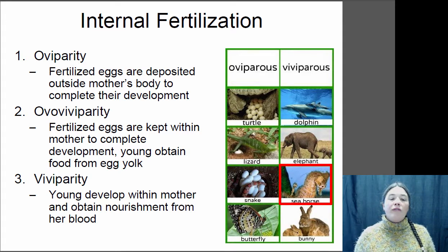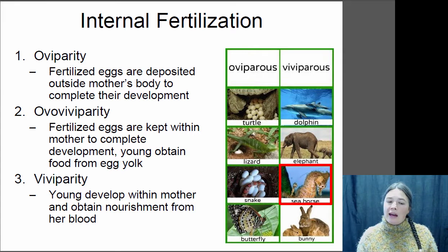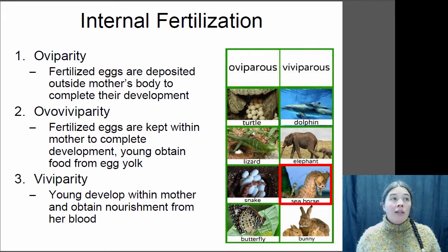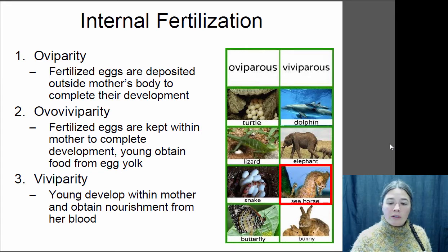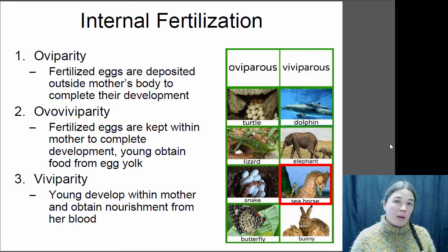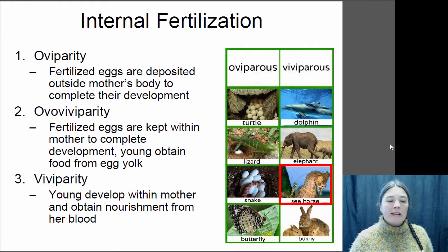You can have ovoviviparity. That is when fertilization occurs inside, there is an egg that is contained within the body and develops inside the body, but the female doesn't really contribute resources to that egg while it's in her body — it just develops in there and then she gives birth to live young. There are a lot of ovoviviparous snakes and some ovoviviparous fish. The seahorse is a really interesting ovoviviparous animal — the one that's boxed in red here — because in the seahorse, rather than the male internally fertilizing the female, the female lays her eggs into a pouch in the male's body, and then the male fertilizes the eggs within his own body with his sperm, and the baby seahorses develop inside the male and then he births live baby seahorses.